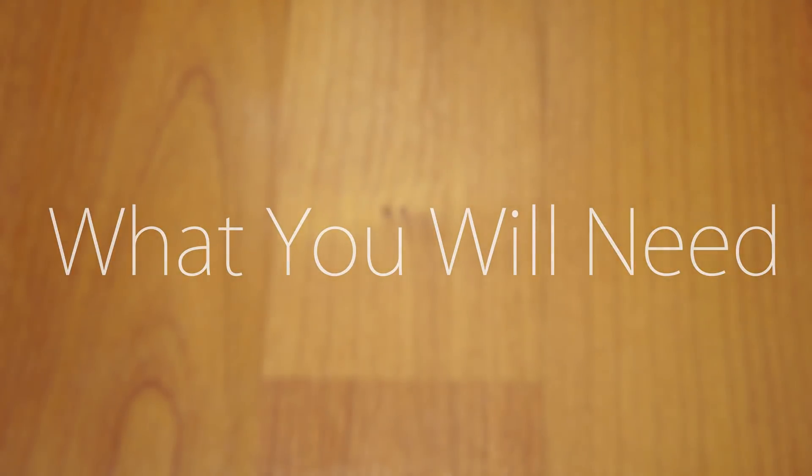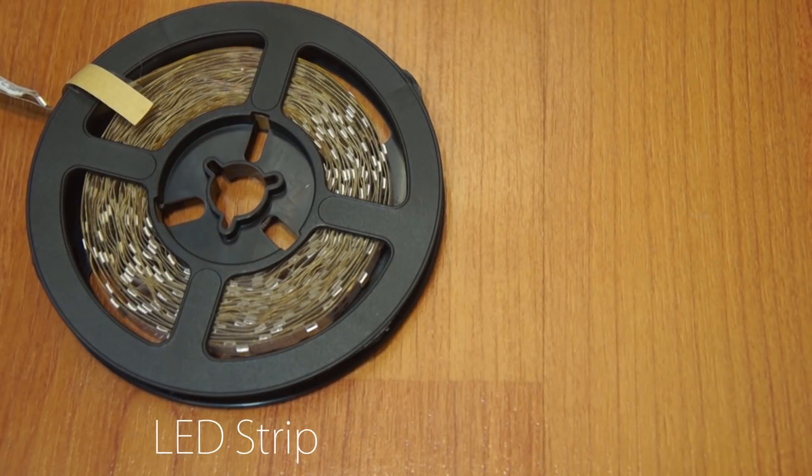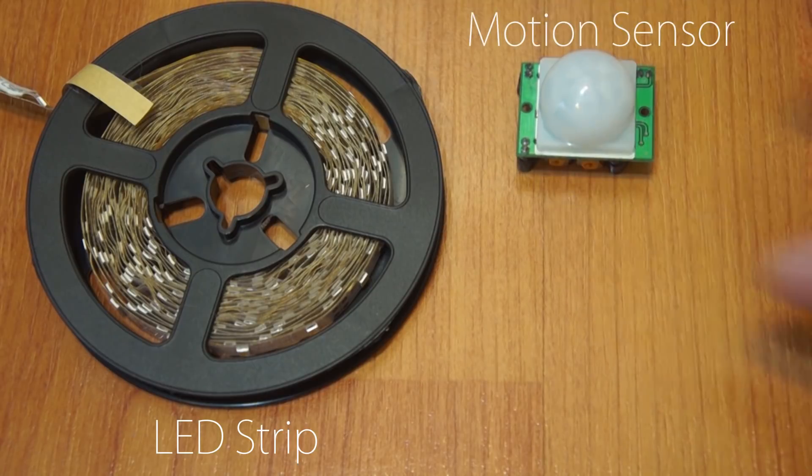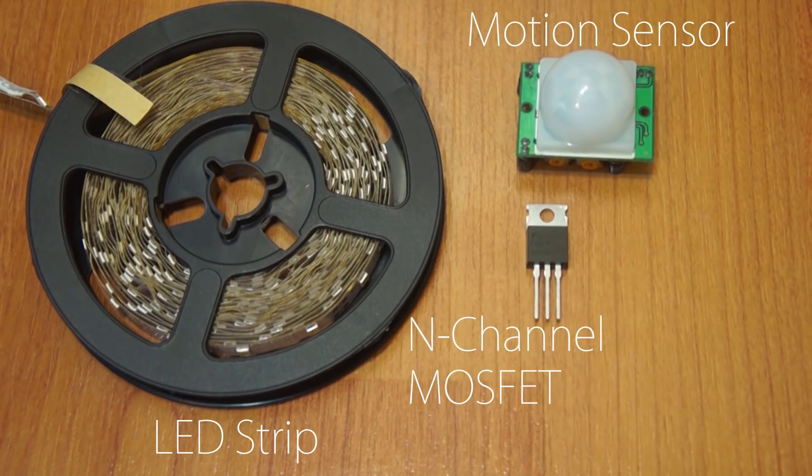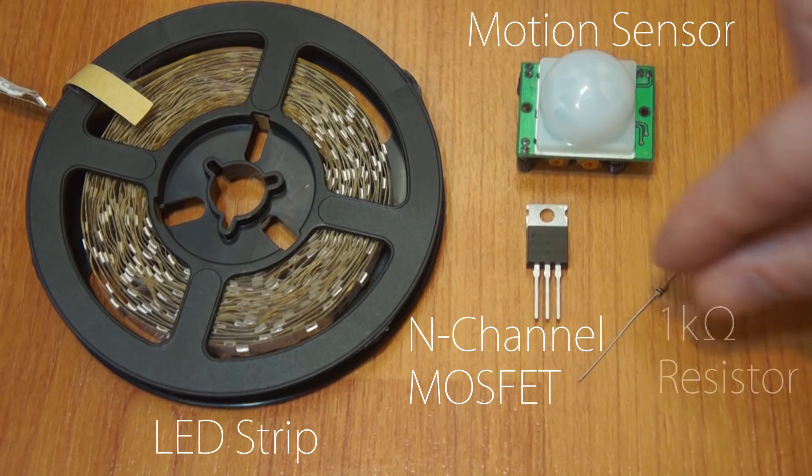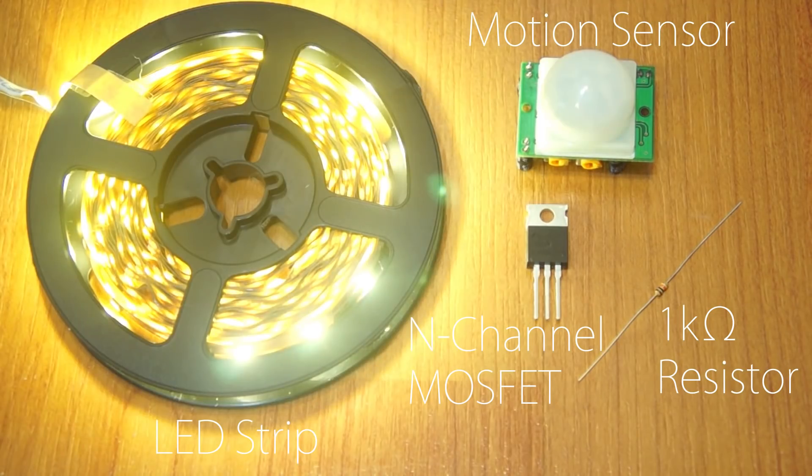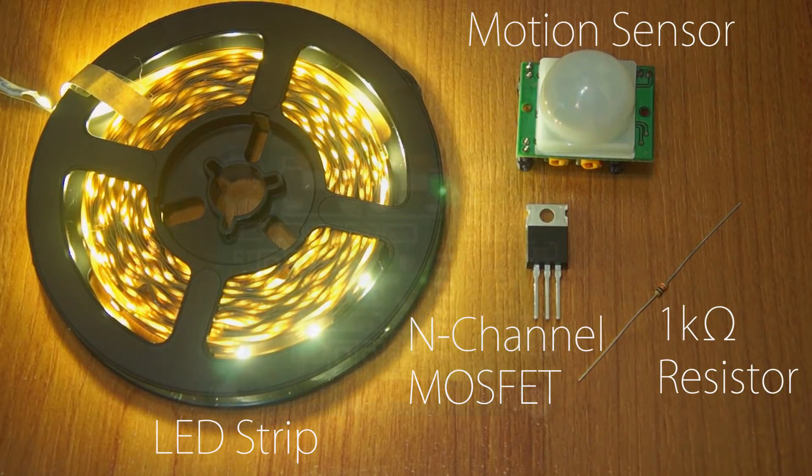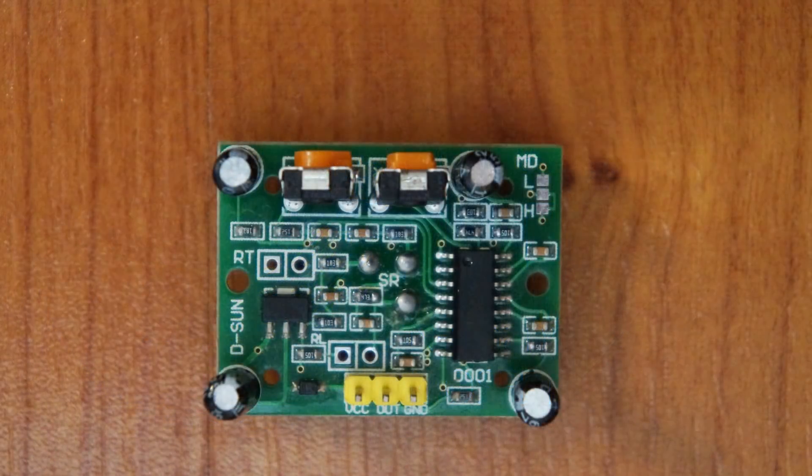Here's what you will need: an LED strip, a motion sensor module, an n-channel MOSFET transistor, and a 1k ohm resistor. Now let's go over the motion sensor module. This is the motion sensor chip.